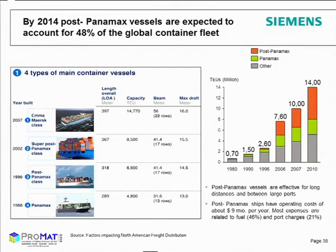There are four main types of container vessels: Emma Maersk class, super post-Panamax, post-Panamax, and Panamax. Panamax vessels have operating costs of around 9 million US dollars per year, with most expenses relating to fuel and port charges. By 2014, post-Panamax vessels will account for 48 percent of the global container fleet — so vessel size is increasing.